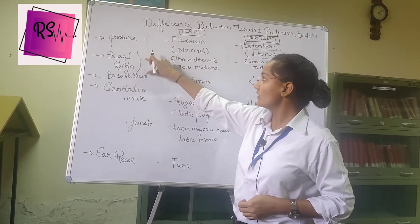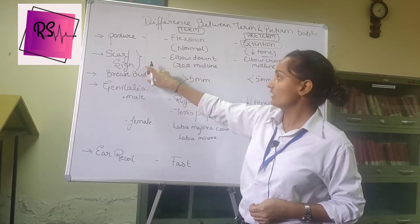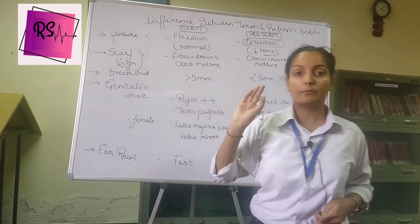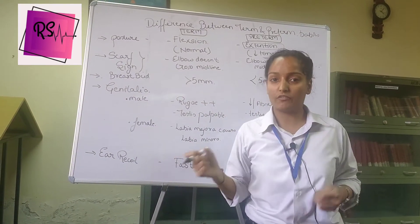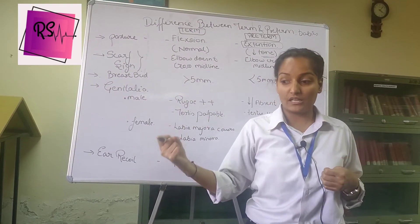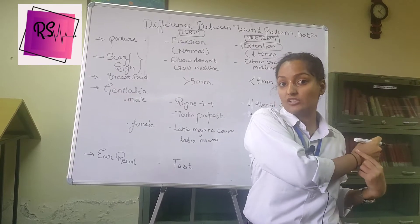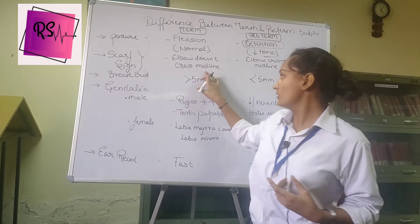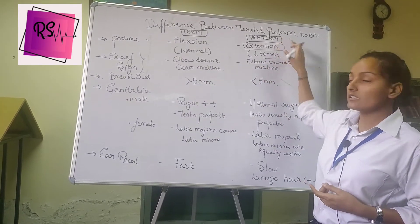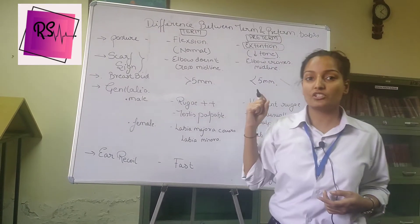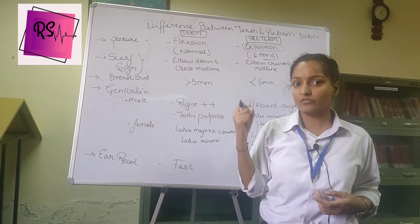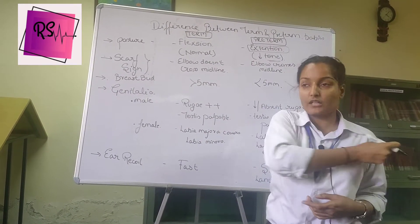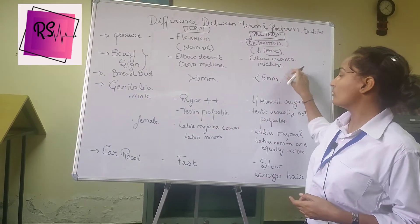The second sign is the scarf sign — the elbow does not cross the midline. In a term baby, flexion is more, so the hand will not cross the midline of the chest. But in the preterm baby, the tone of the hand is decreased, so the hand will easily cross the midline — the elbow crosses the midline.